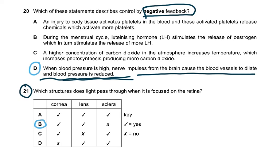Question 21: Which structure does light pass through when it is focused on the retina? It passes through the cornea, it passes through the lens, but it does not pass through the sclera. If you need to revise this, please revise the anatomy of the eye and I'm sure you'll get it right.